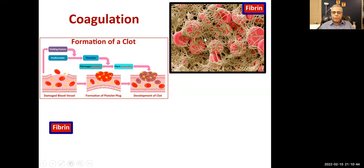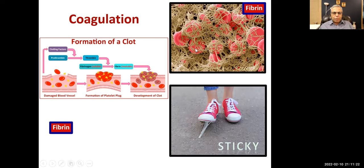Thrombin converts fibrinogen to fibrin, which is the final step in the coagulation cascade. This is an electron micrograph showing fibrin threads — these fibers make a meshwork in which RBCs and white blood cells are trapped. The clot formation goes on expanding until there are factors in the blood that stop the expansion, or we use drugs to stop it.